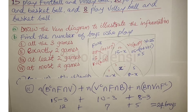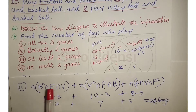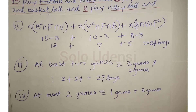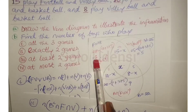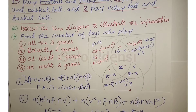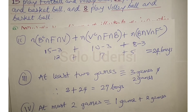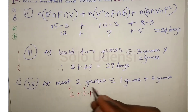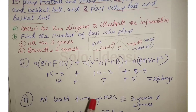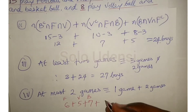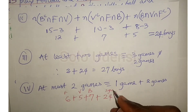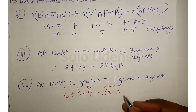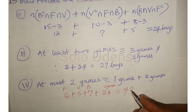At most two games means one game and two games. One game: 6 football only, 5 volleyball only, and 7 basketball only. So 6 + 5 + 7 = 18 play exactly one game. Then plus two games which is 24: 18 + 24 = 42 boys play at most two games.